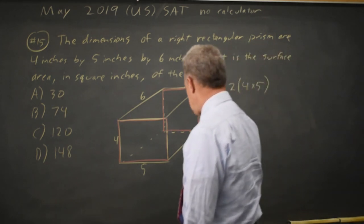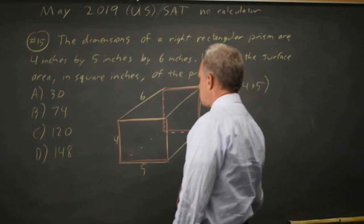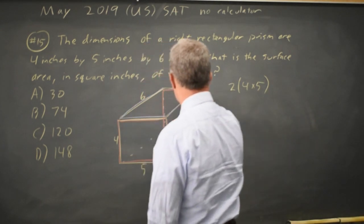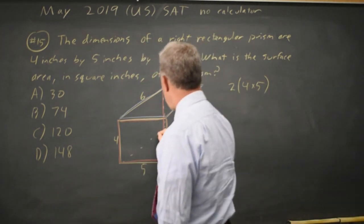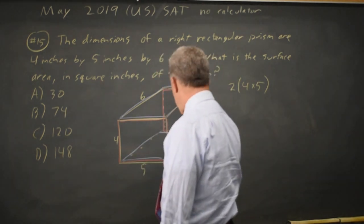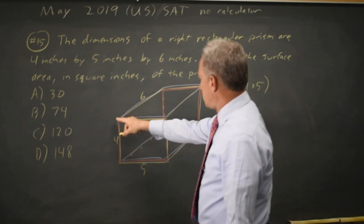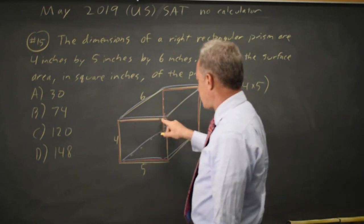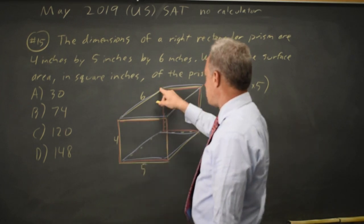Two sides, the top and bottom here, are 5 by 6. This edge is 5 because this edge is 5, and this edge is 6.